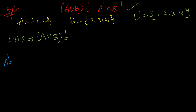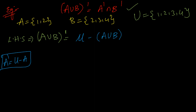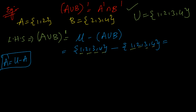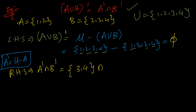A complement means universal set minus A. So (A union B) complement = {1, 2, 3, 4} minus {1, 2, 3, 4} = empty set, since all elements are common and nothing is left. Now for the right-hand side: A complement intersection B complement.